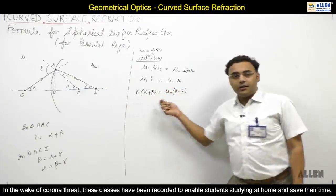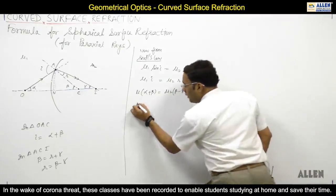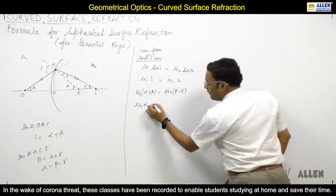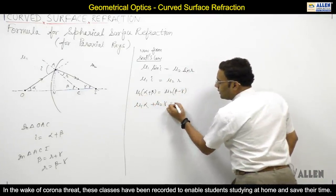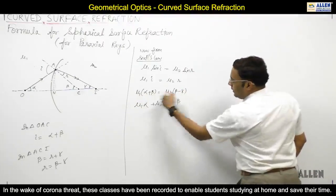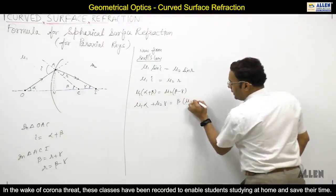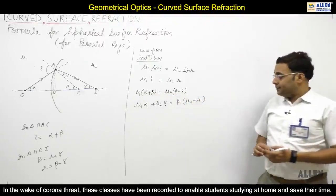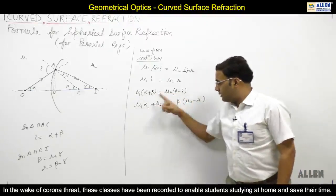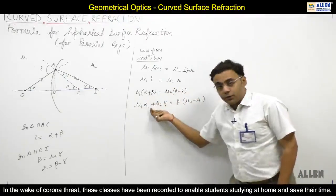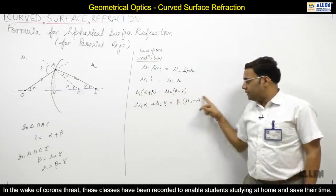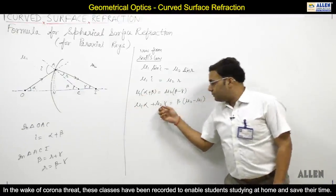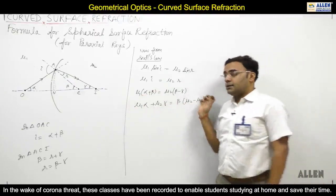Rearranging this equation, moving beta terms to one side: μ1·alpha + μ2·gamma = beta(μ2 - μ1). So μ1·alpha + μ2·gamma is equal to beta times (μ2 minus μ1).